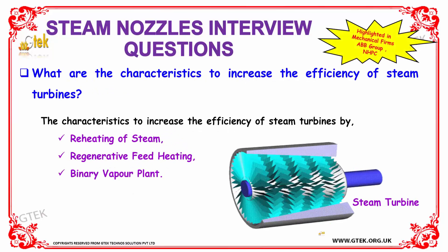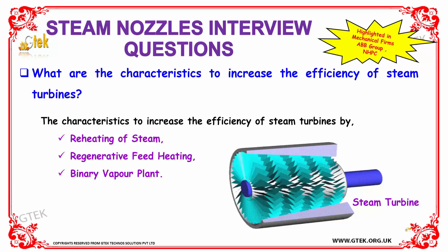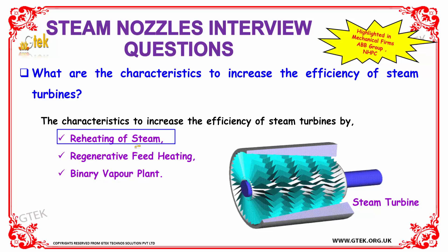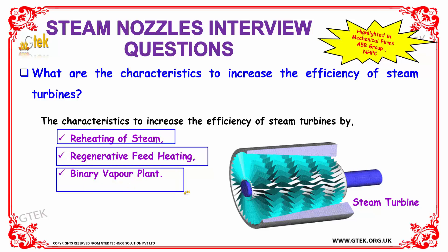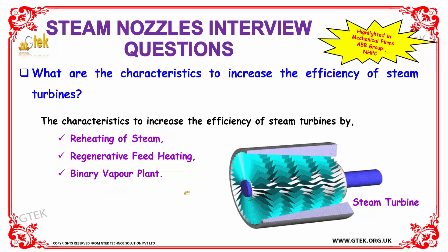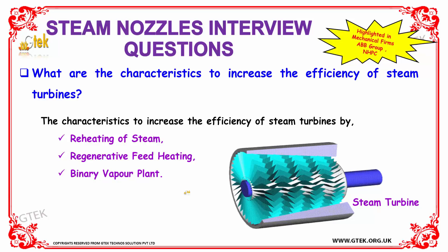What are the characteristics to increase the efficiency of steam turbines? The characteristics to increase the efficiency of steam turbines are: by reheating of steam, by regenerative feed heating, and binary vapour plant.